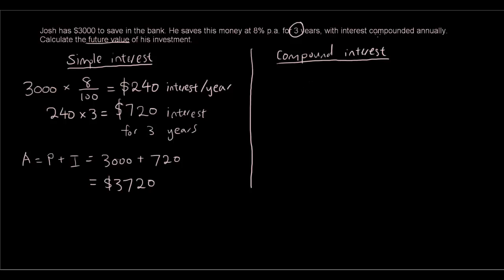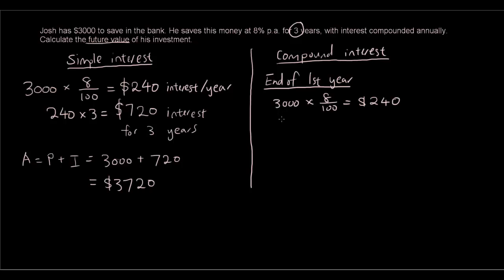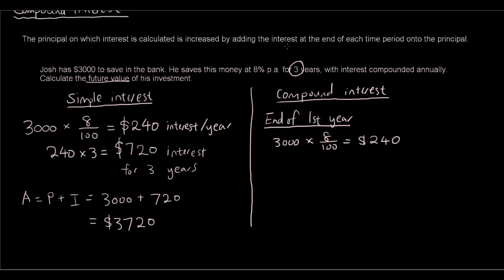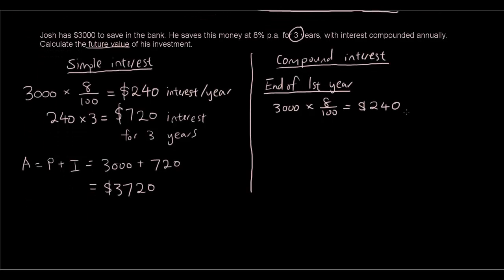Now let's do this problem for real, taking into account that this is compound interest. We are going to look at this one year at a time. At the end of the first year, the interest that Josh earns is $3,000 times 8 over 100, which is $240. Now here is the difference: the principal is increased by adding the interest onto the principal, so $3,000 plus $240 is $3,240.